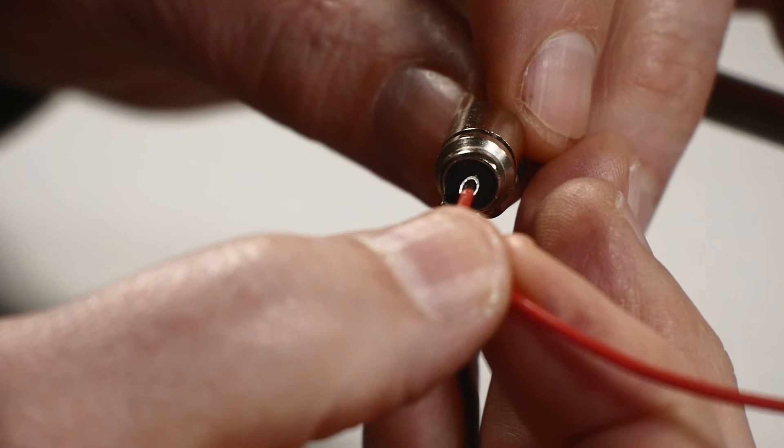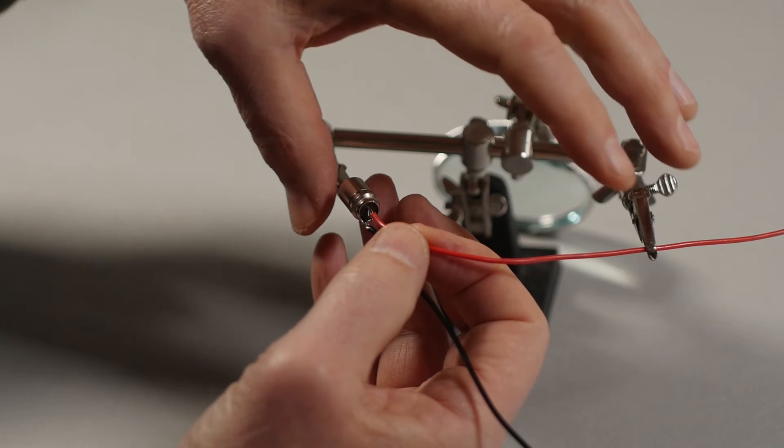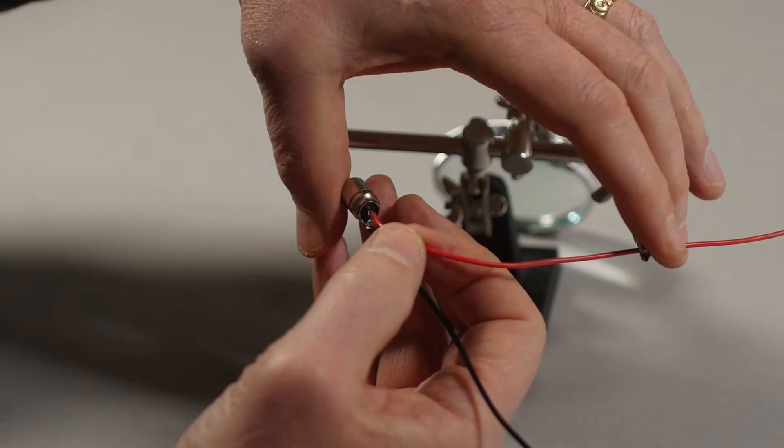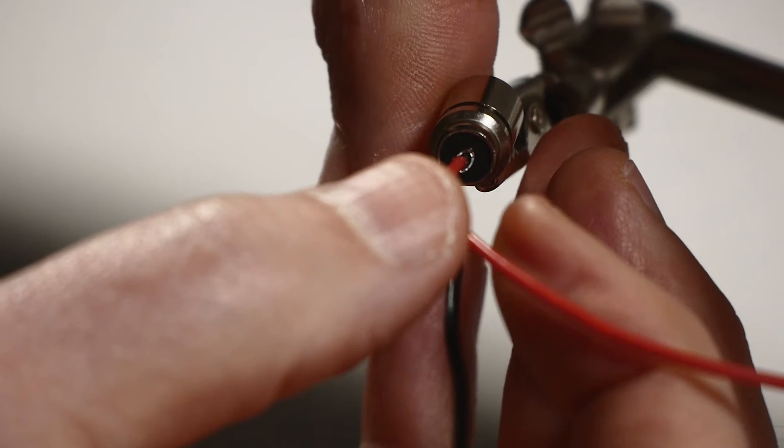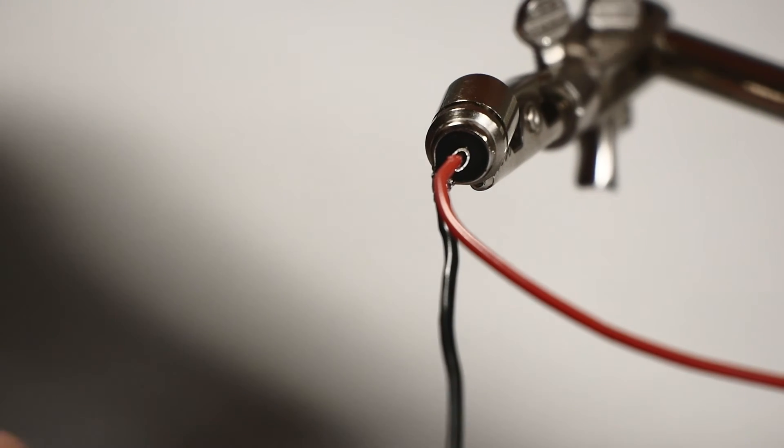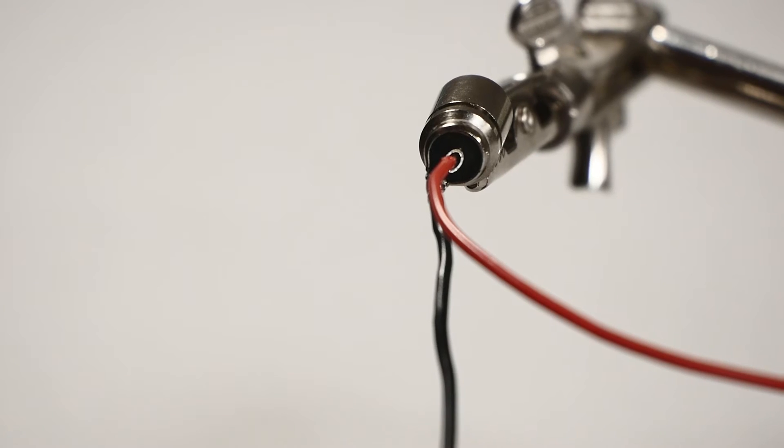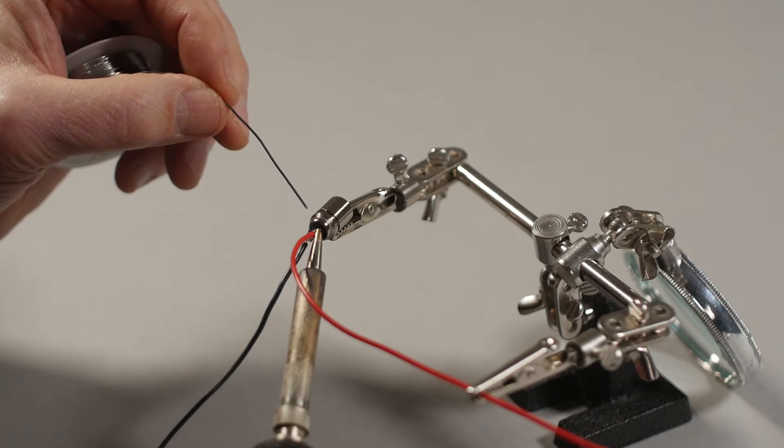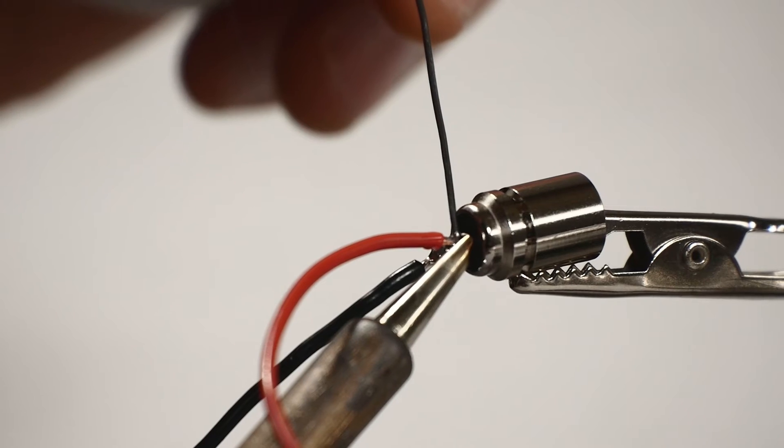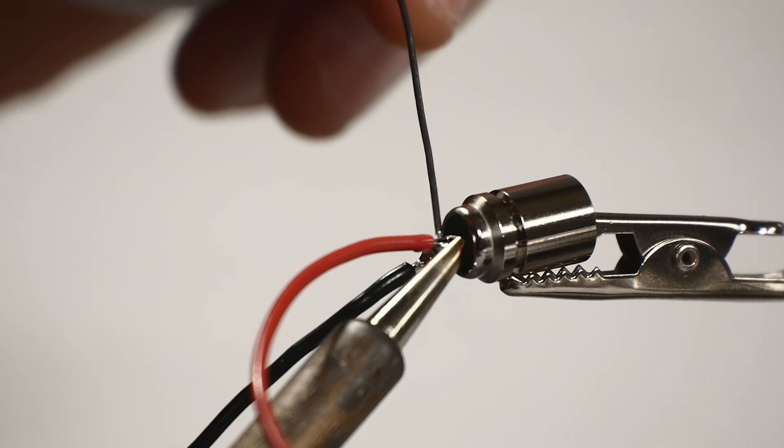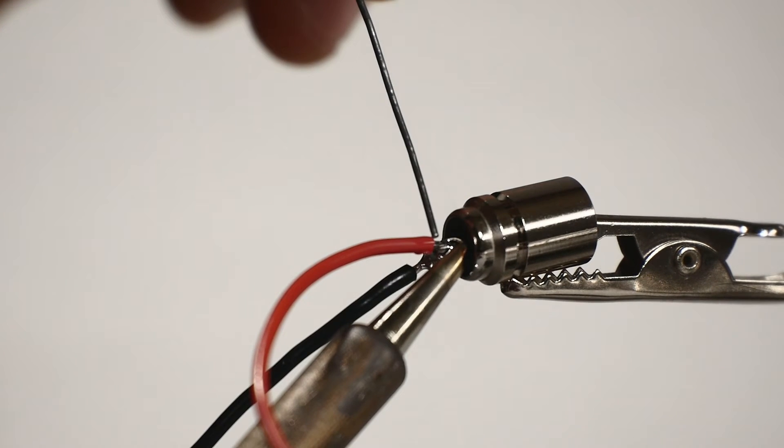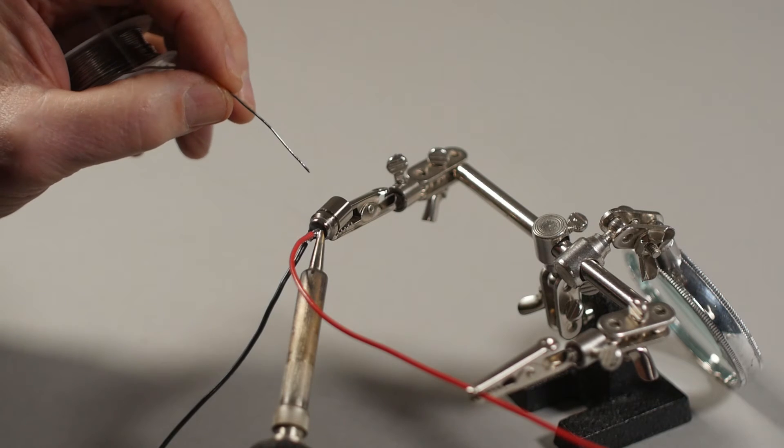Insert the other pre-stripped and pre-tinned wire into the center cup until the conductor is encapsulated by the cup. Be sure the insulated section of wire does not enter the cup. Apply heat to the cup with the soldering iron. Feed solder into the joint until the solder wets the entire inside of the cup, filling it 100% with no solder on the outside of the cup.